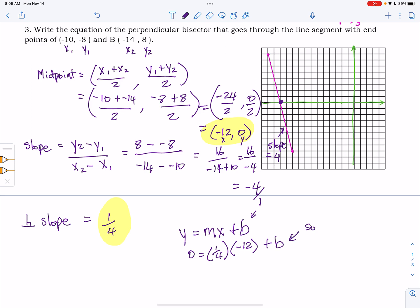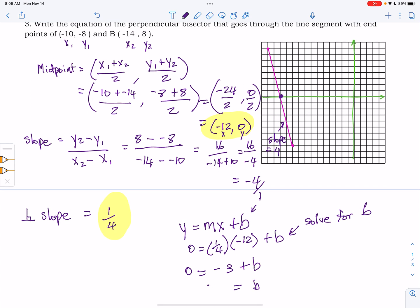Now we can solve for b. And so we get that 0 is equal to negative 3 plus b, and b is equal to 3.